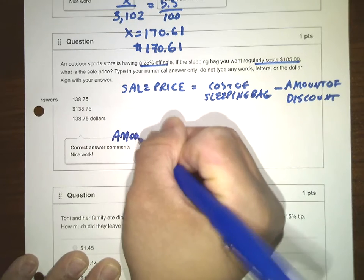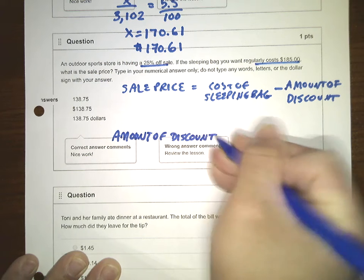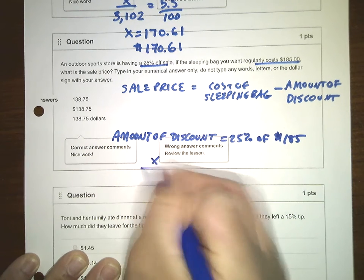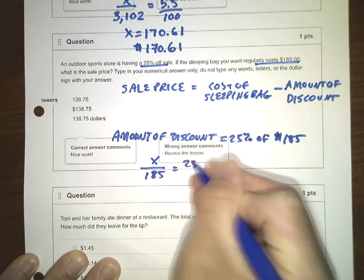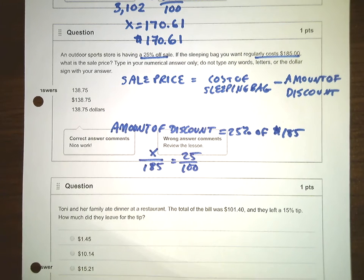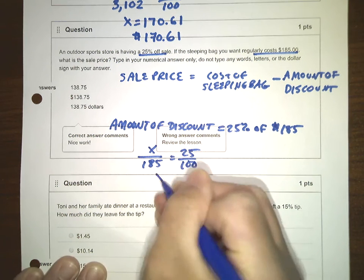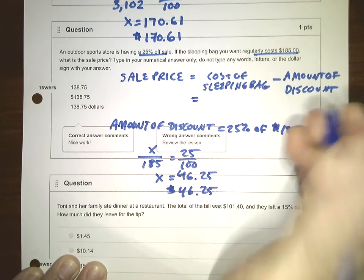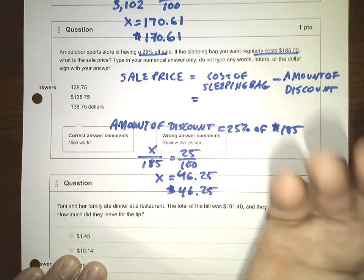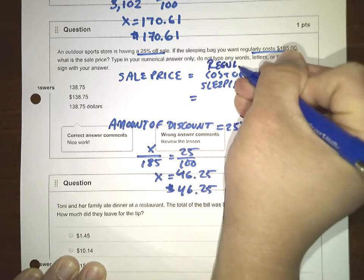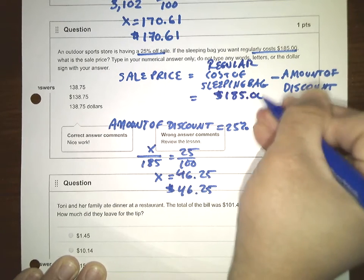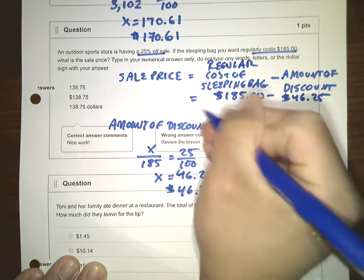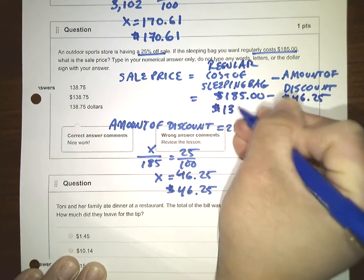The amount of the discount is 25% of $185. X out of 185 equals 25 out of 100. X is $46.25, which means the discount is $46.25. So the regular cost of the sleeping bag was $185, minus the discount of $46.25, giving a sales price of $138.75.